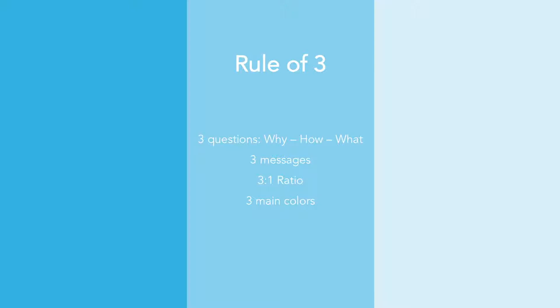The first and most important way to use the rule of three is to answer the three most important questions of any scientific research. Start with why you do this research, then move on to how you plan to do it.